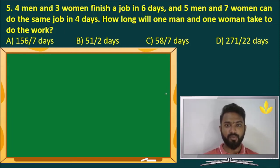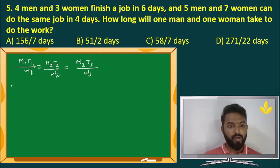Let us move on. 4 men and 3 women finish the job in 6 days, 5 men, 7 women, same job in 4 days. How long one man and one woman take to do the work? This is a slightly complicated one. Let me tell you how we should start. So we have M1 T1 by W1 equals M2 T2 by W2 equals M3 T3 by W3. Now concentrate, M1 is 4 men plus 3 women. M is the efficiency of one man, W is the efficiency of one woman. T1 is 6 days divided by W1 is 1.